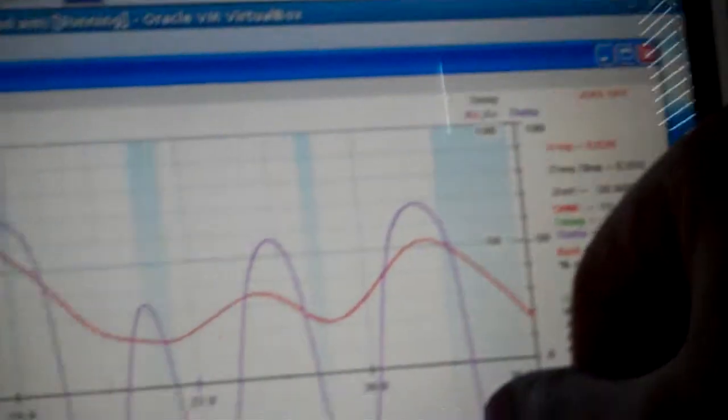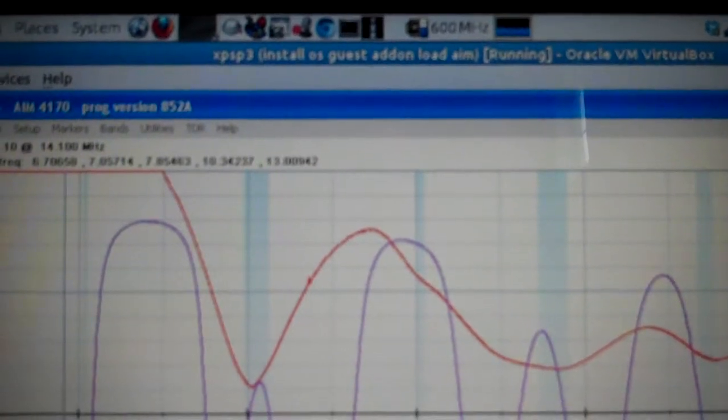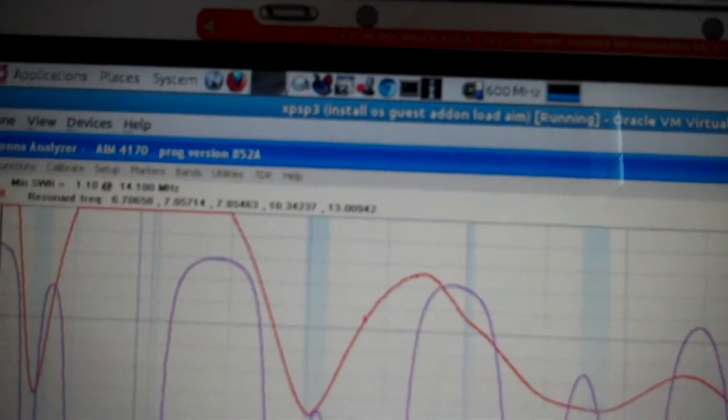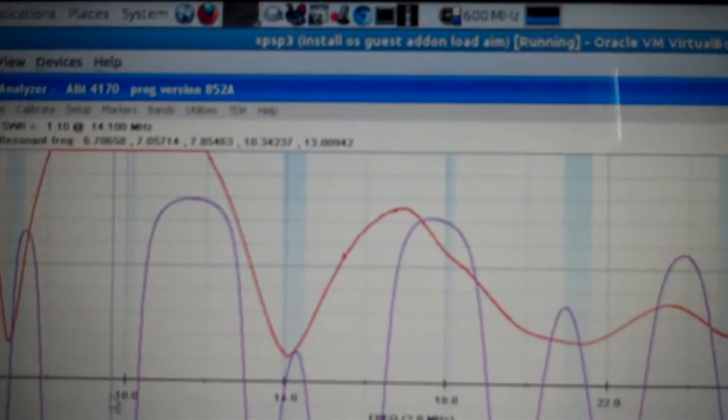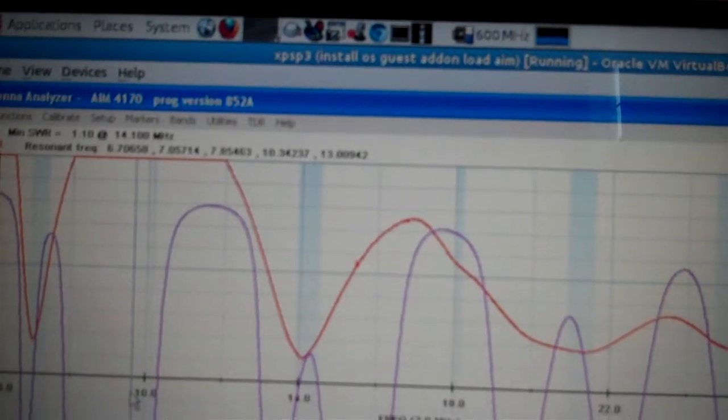So this is a single 40 meter loop. It's 133 feet long and it's in a horizontal delta configuration, triangular. It's only about 6 or 8 feet above the ground and it does a pretty good job making contacts 8,000 miles away with it.